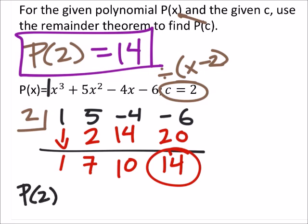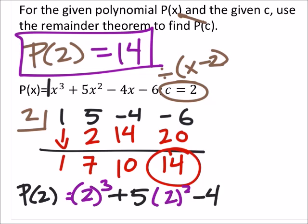So, P of 2 would be x cubed, and we're saying right now that x is 14. Let's go ahead. I'm sorry, 2. Now, 14 is supposed to be the answer, right? So, x is supposed to be 2. Let's cube that. We're going to add that to 5 times x, which is 2, which we're going to square, minus 4 times x, which is 2, and then we'll subtract 6.